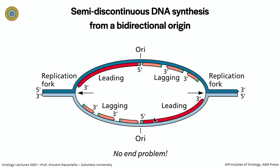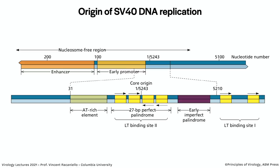There is no end problem here because SV40 is a circular DNA. The leading strand will continue around the circle, rna primers can be removed and gaps filled in with no issue — because there are no ends. This is one solution that our linear chromosomes don't have.